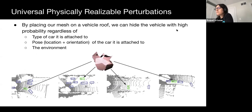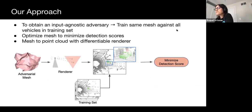By placing our adversarial mesh on a vehicle roof, we can hide the vehicle with high probability, no matter what kind of car it is, what its pose is, or what the environment is. Note that our mesh is the same for all vehicles. As shown in the illustration, the same adversarial mesh successfully hides different vehicles at different positions in different scenes. Furthermore, with a single adversarial example for all inputs, no optimization is required during the attack. We aim to discover a single mesh that is an adversary against all vehicles in the training set, making the adversary input-agnostic under the training distribution.